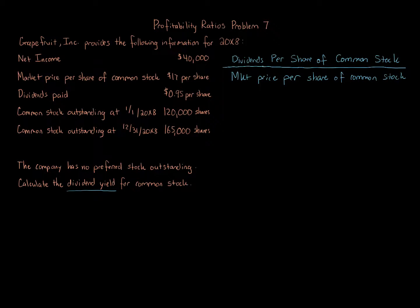Dividends per share of common stock is given as $0.95. There's no preferred stock here, so we don't have to factor that in — we're focusing on common stock. This is a dividend yield for common stock; we could calculate a dividend yield for preferred stock, but that's not what we're asked. Usually dividend yield focuses on common stock, and if you're not told anything specific, it will be for common stock.